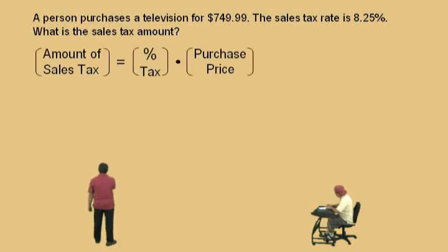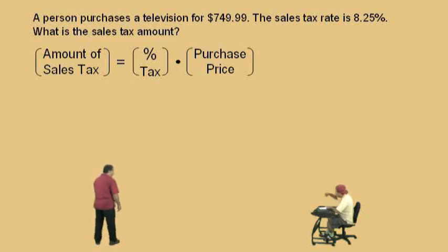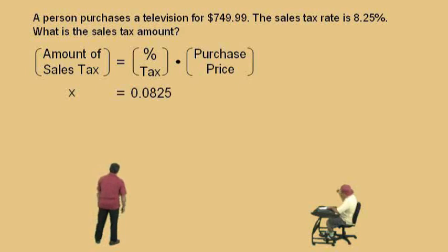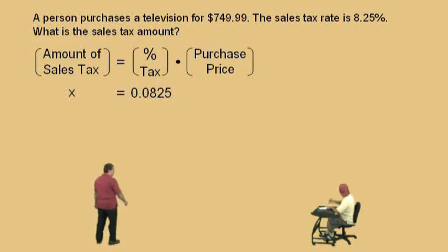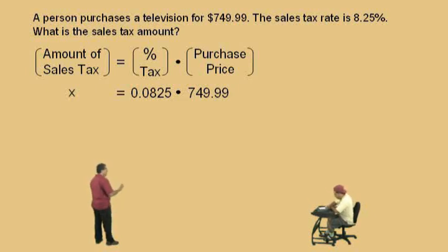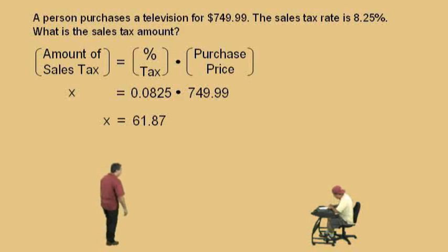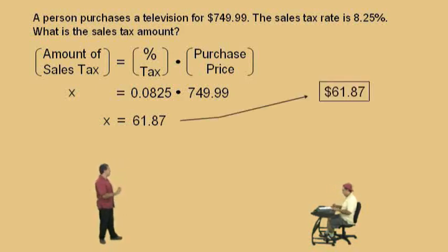Okay, so here's our format: the amount of sales tax is equal to the percent tax times the purchase price. Now, which one are we looking for, Charlie? The amount of sales tax — that's our X. What's our percent tax as a decimal? 0.0825 — you move it two places to the left. And what's our purchase price? $749.99. So to solve for X, you just multiply. And what do you get, Charlie? 61.87.